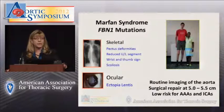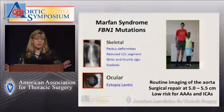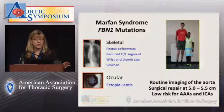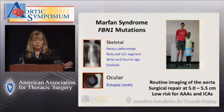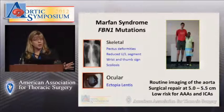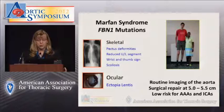Most people know about Marfan syndrome. The skeletal features are very pronounced, making it easy to identify. Marfan syndrome is the only syndrome with ectopia lentis, which appears to be a specific finding. We know how to manage these patients — we do routine imaging of the aorta by echocardiography because of root aneurysms, recommend surgical repair around 5 to 5.5 centimeters, and we know they're at low risk for further vascular disease such as abdominal or intracranial aneurysms.